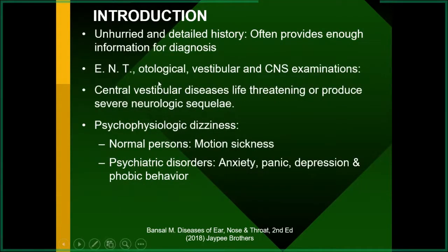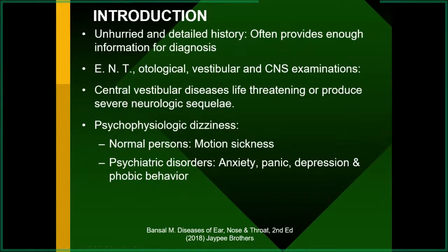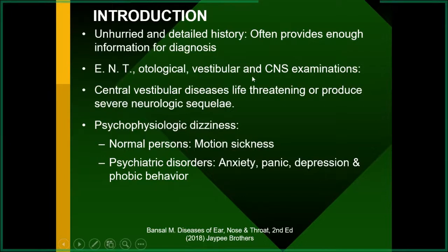History taking must be unhurried and detailed. Done properly, it requires a minimum of 30 minutes. In a busy OPD, we may simply prescribe anti-vertigo medication, but that is not the right way to treat the patient. These patients should be given a proper appointment so that history can be taken systematically — 90% of cases can be diagnosed on history alone. Examination includes complete ENT examination, otoscopy, vestibular and CNS examination including cranial nerves, motor system, and sensory system.